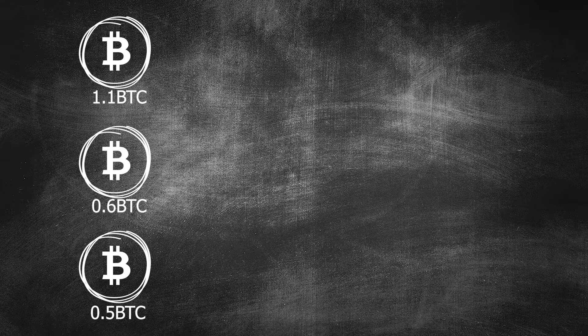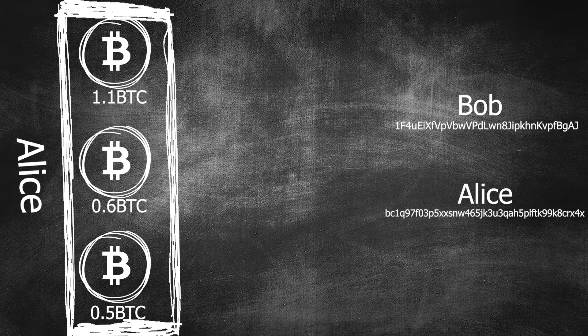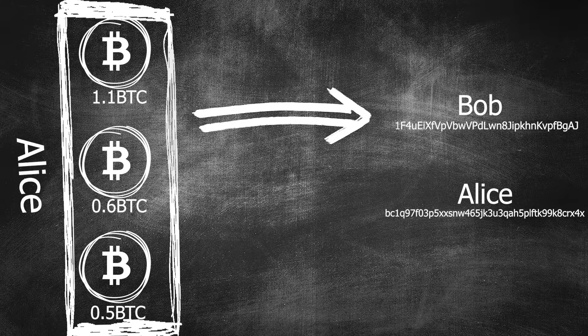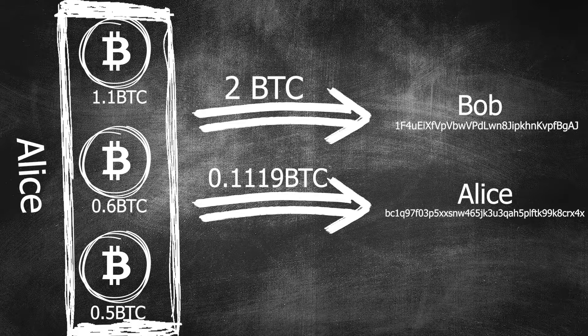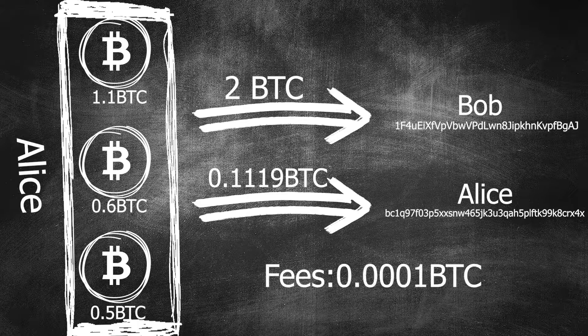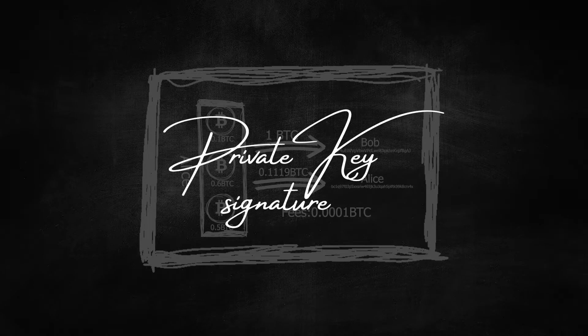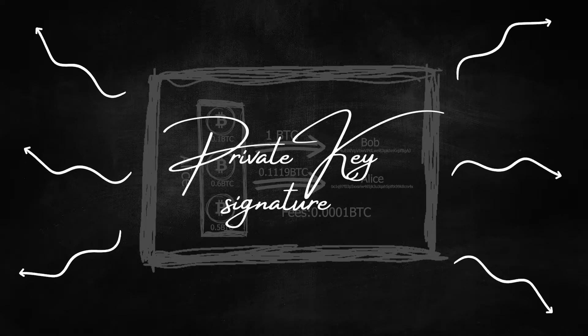We also have to add the recipients, which will become our outputs. Usually there is a single recipient and a change address controlled by the sender. There are a few other key elements like amounts specified for these recipients; the difference is calculated to be transaction fees. Raw transactions like that need to be signed by a private key, and the signed transaction can then be included in a block.